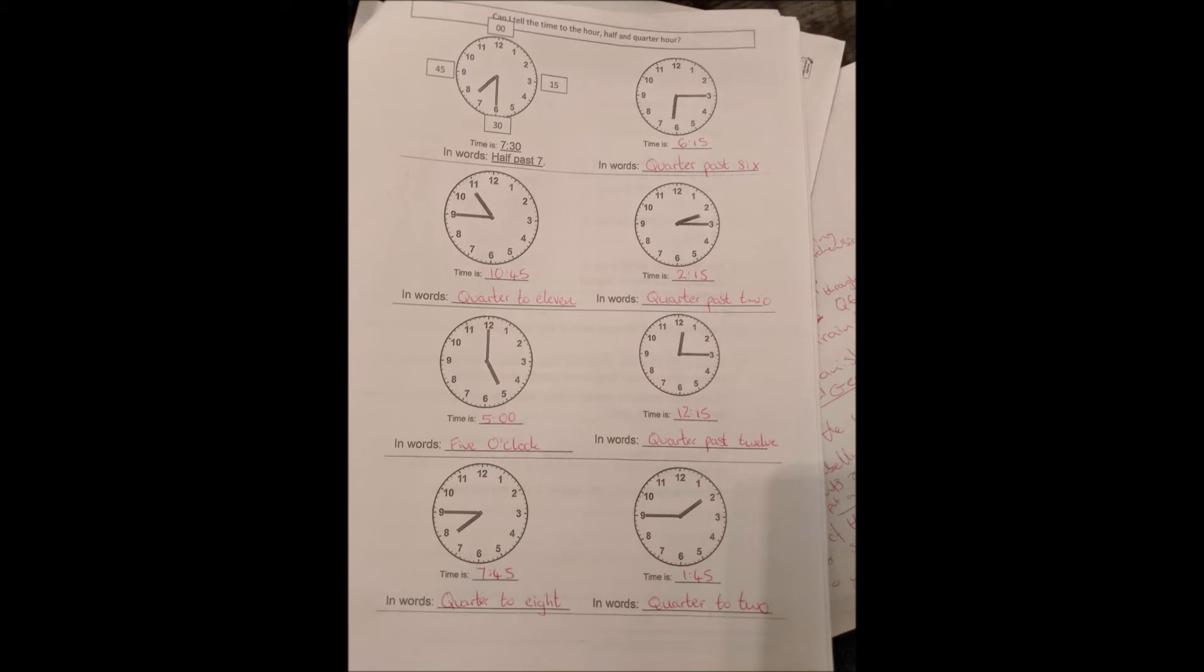The next sheet that starts with the example 7.30. 6.15 in words quarter past 6. 10.45 in words quarter to 11. 2.15 in words quarter past 2.